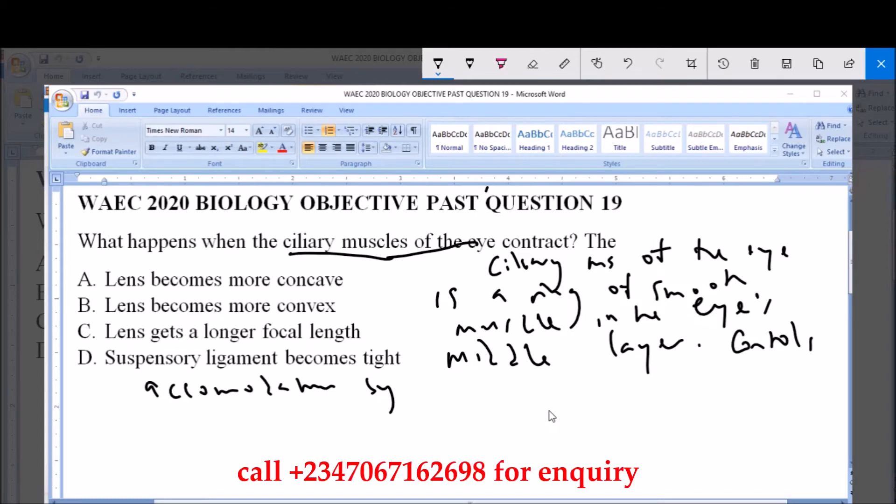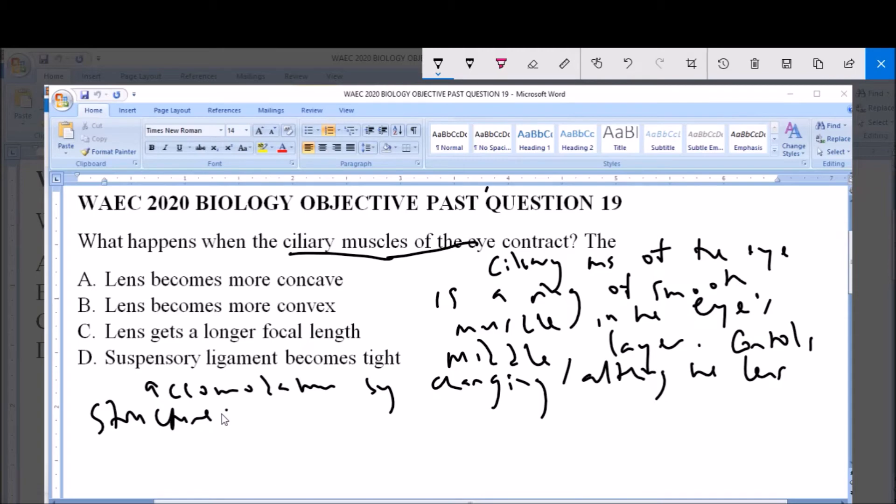Now, when it contracts, it means that accommodation needs to take place. So when it contracts, what happens to the lens is that the lens becomes more concave. The lens becomes more concave.